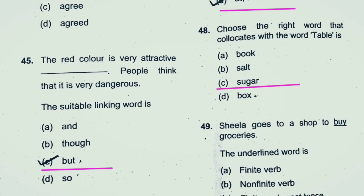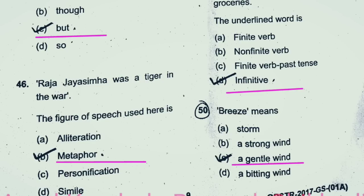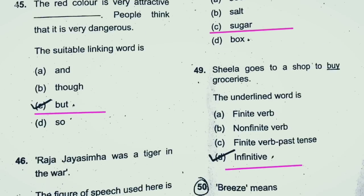Question 45 and 46: The red color is very attractive, but people think that it is very dangerous. Question 46: Raja Jayasimma was a tiger. So the right answer is metaphor. Option B — metaphor is the right answer.